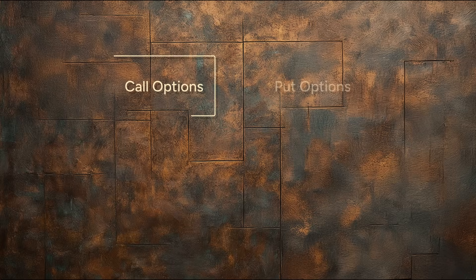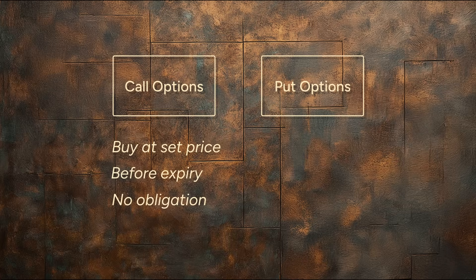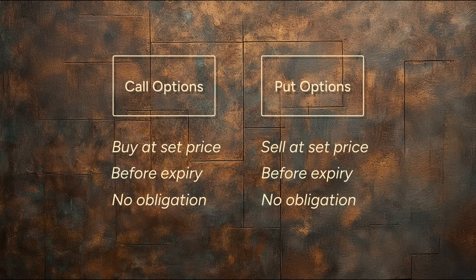Options come in two types: calls and puts. A call option lets you buy an asset at a set price before the expiration date — there's no pressure to do it. A put option lets you sell at the strike price, same deal. That's why they're called options: you've got the choice to act or not. It's optional.